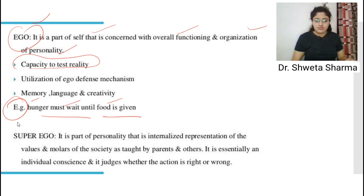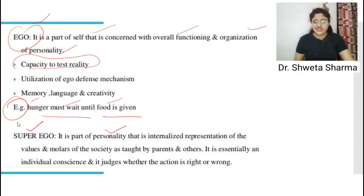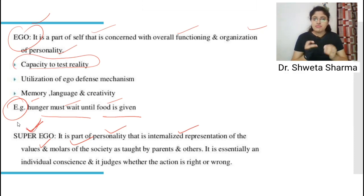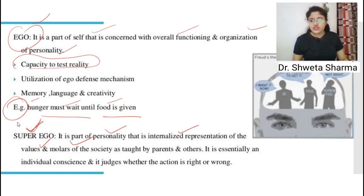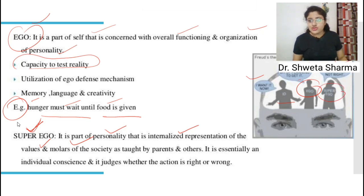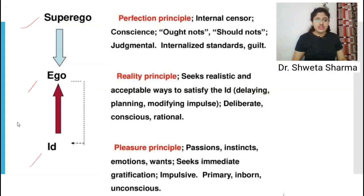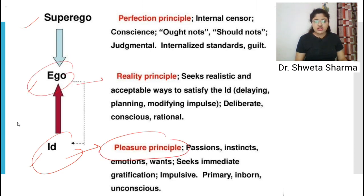The super-ego is idealistic — it is the part of personality that is the internalized representation of the values and morals of society. For example, whatever restrictions exist in the house, the super-ego will always follow those restrictions in any circumstance. So: id works on the pleasure principle, ego works on the reality principle, and super-ego works on the perfection principle.